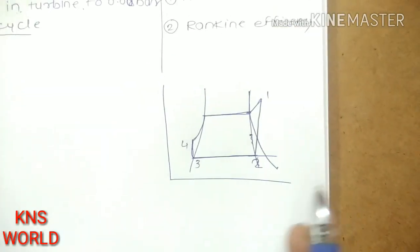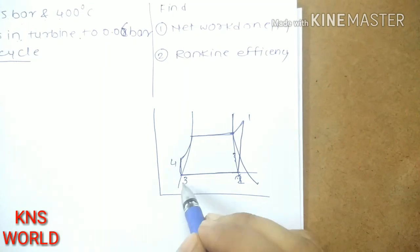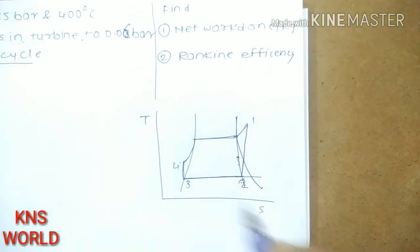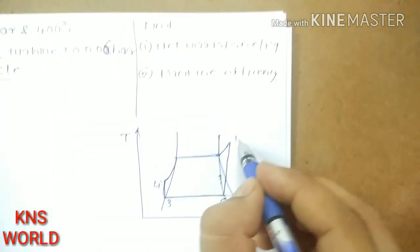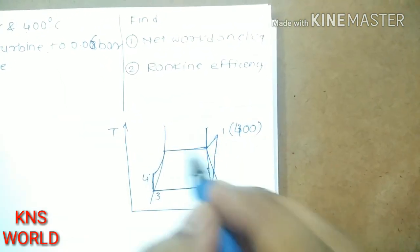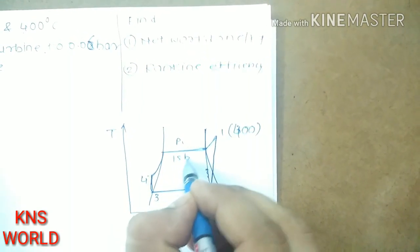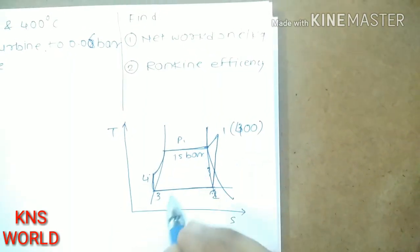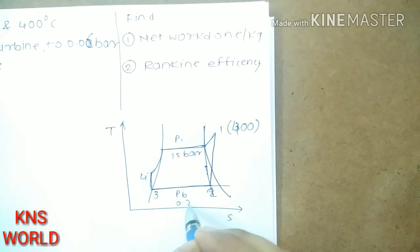For this, we are making a TS diagram like this — points 1, 2, 3, 4. Here, at point 1, the temperature is 400 degrees Celsius. This is P1, which is 15 bar, and this is PB, which is 0.06 bar.